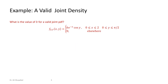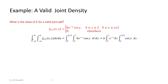Now let's see an example for a valid joint density function. The question says: what is the value of P for a valid joint PDF? The PDF is given as a joint between X and Y, for X between 0 and 2, and Y between 0 and pi over 2, and zero otherwise. For a valid PDF with two random variables, the double integration — the volume — must equal one. We set up the integration limits for X from 0 to 2 and for Y from 0 to pi over 2; everything else is zero so those limits drop out. Luckily, this integration is separable — we can separate X and Y easily.